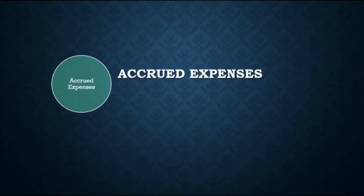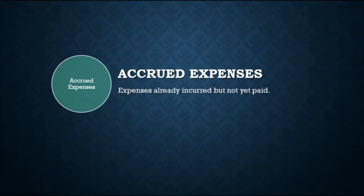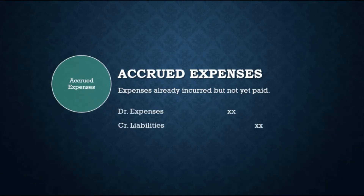First, let's discuss accrued expenses — expenses already incurred but not yet paid. This is a liability account also called accrued liabilities or accrued payable. We prepare this adjusting entry because there are expenses incurred at the end of the period that will be paid in the next period. Examples include taxes payable, interest payable, utilities payable, salaries or wages payable, rent payable, and advertising payable. Prior to adjustment, liabilities and expenses are understated. Therefore, the adjusting entry results in a debit to an expense account and a credit to a liability account.